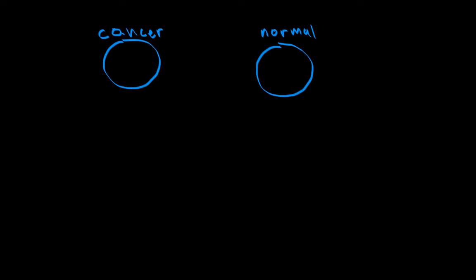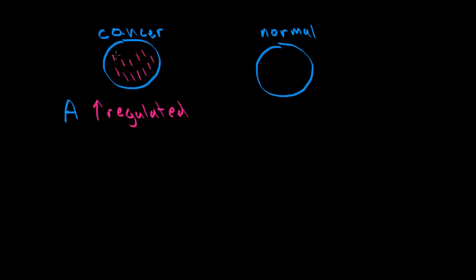Let's imagine we're looking at a gene — we'll call it gene A. When gene A is upregulated, the gene will be transcribed and there will be lots of mRNA floating around inside the cell. So in the cancer cell, if gene A is upregulated, we've got lots of gene A's mRNA — compared to normal levels, where maybe only three or four mRNAs are floating around in a normal cell.